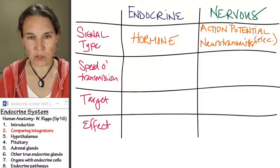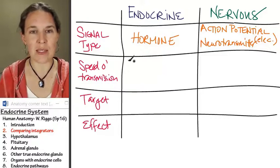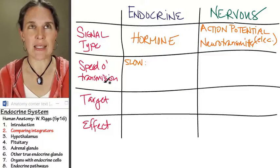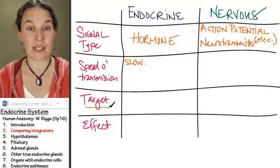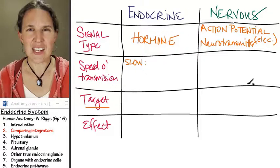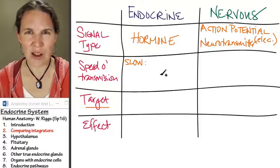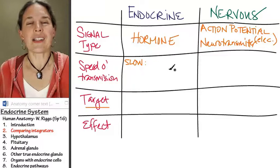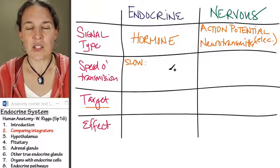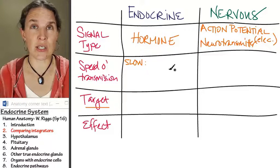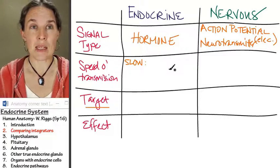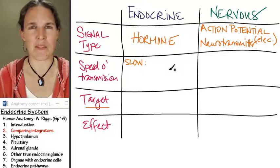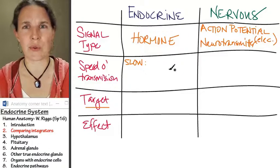In general, the endocrine system is slow in terms of speed of transmission — how fast does the message get to the target. In the endocrine system, the message has to travel through the blood. Your blood actually circulates one entire time through your system in about a minute — it takes a minute to pump all your blood through your system.